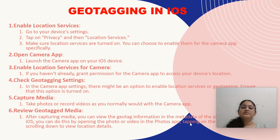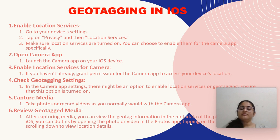Geotagging in iOS: To enable geotagging on your iOS device, go to your device's settings and tap on Privacy, then Location Services. Make sure location services are turned on — you can choose to enable them from the camera app specifically. Launch the camera app, and if you haven't already, grant permission for the camera app to access your device's location. In the camera app settings, there might be an option to enable location services or geotagging — ensure that this option is turned on. Take photos or record videos, and after capturing the media, you can view the geotag information in the metadata of the image. You can also do this by opening the photo or video in the Photos app.